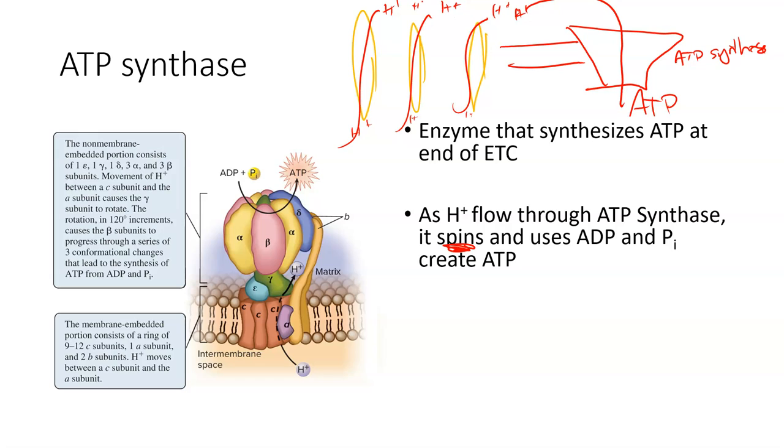You know what a windmill looks like, or a wind turbine. As it spins from the wind, it's going to create energy. So as all of the hydrogen molecules flow through ATP synthase, this ATP synthase will begin to spin. And as it spins, it causes ATP to be produced.